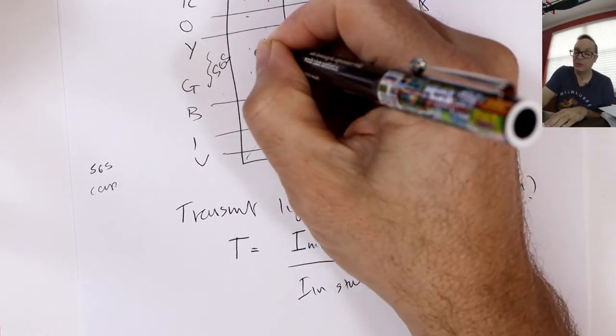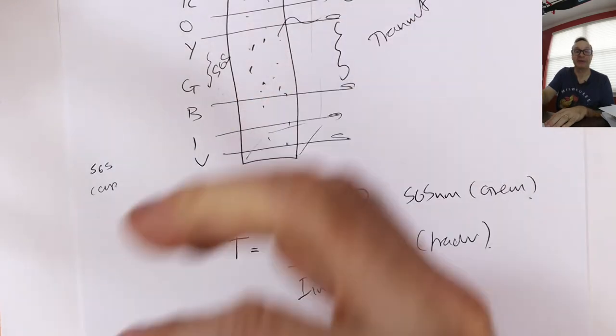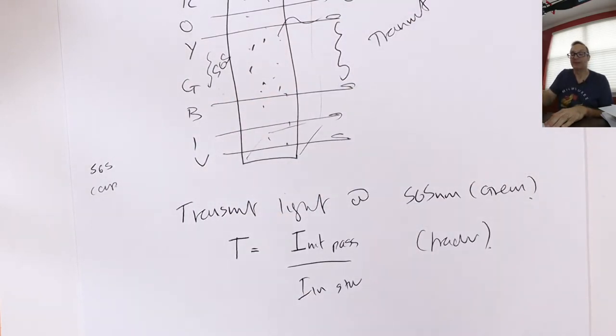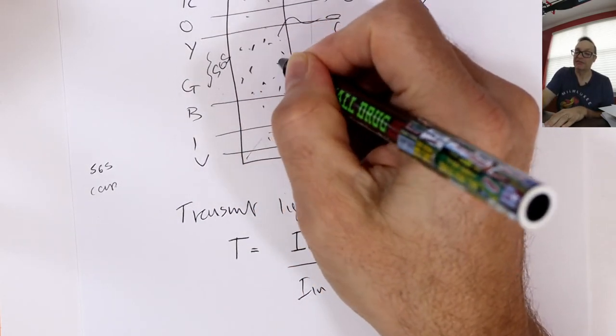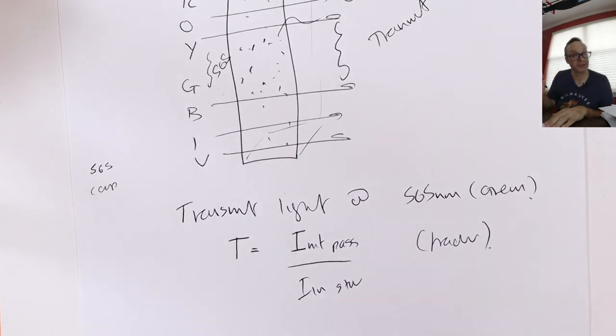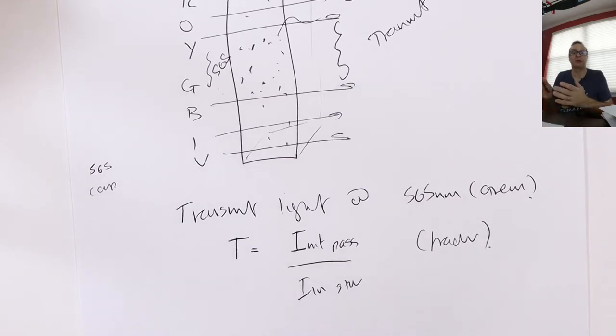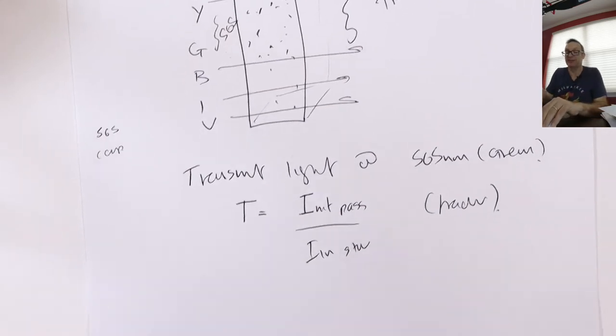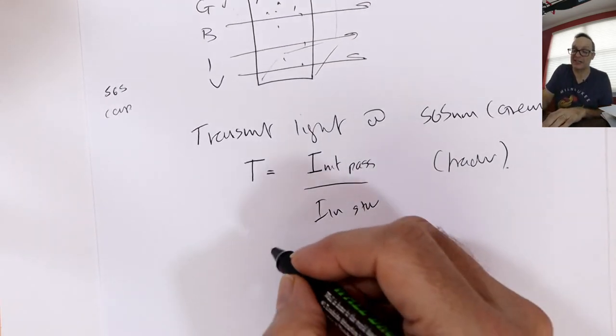So materials absorb their complementary color. We see what's left. Now, here's the very concept of Beer's Law. So we transmit light at 565 nanometers, which is the green light. That's coming in through here. Now, transmission is just a fraction, it's the intensity that's passed through over the intensity that you start with. So if I start with 100 photons of green and only 50 get through, transmission is 0.5. It's a fraction.